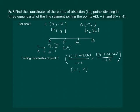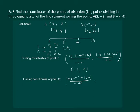Similarly, we calculate the coordinates of point Q. This time m1 is 2 and m2 is 1. Again using the section formula we get (2×(-7) + 1×2) / (2+1) for the x-coordinate, and (2×4 + 1×(-2)) / (2+1) for the y-coordinate. On solving, the coordinates of point Q are (-4, 2).